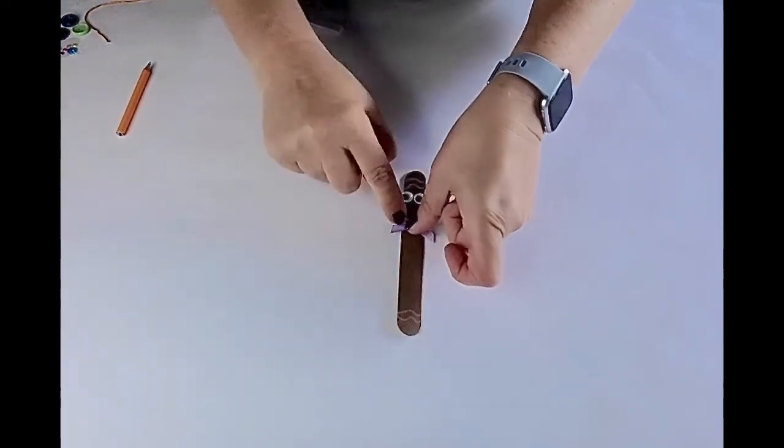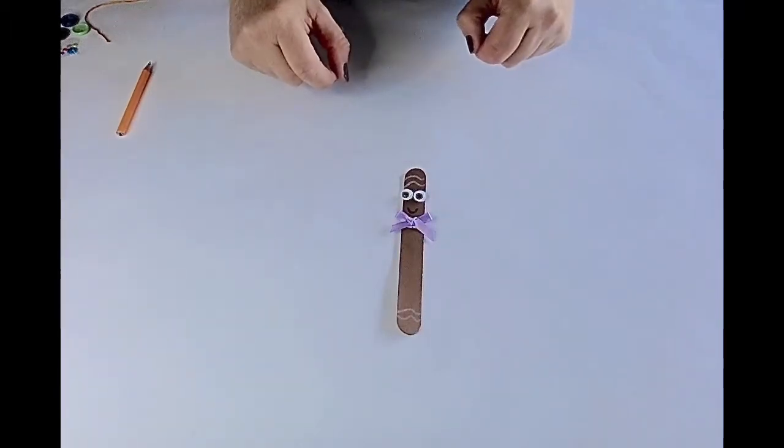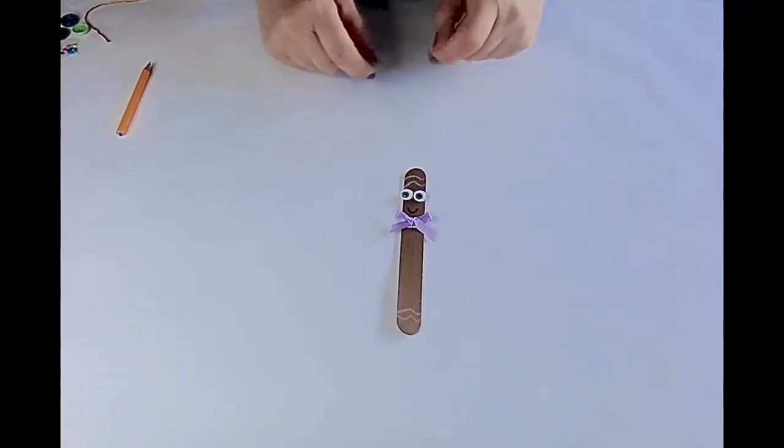So take the backings off and then you can put your bow wherever you want to position it on your gingerbread man. Okay, so it's already looking pretty cool isn't it?